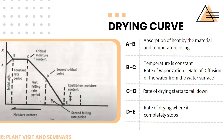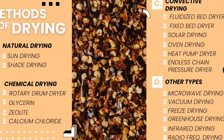From D to A is the second falling rate period, approaching point E, which is the equilibrium moisture content — at this stage the material has virtually no water content remaining. For the methods of drying, we have natural drying, chemical drying, convective drying, and other types.